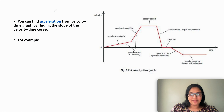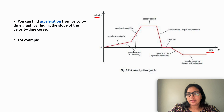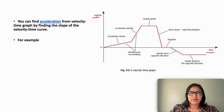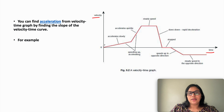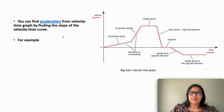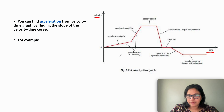Let us start with an example. This is a velocity-time graph where time is taken along the x-axis and velocity is taken along the y-axis. This is the nature of the graph, and we will look at how to interpret it.